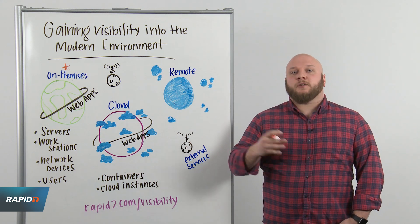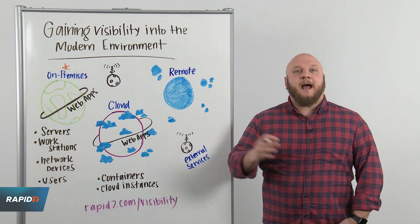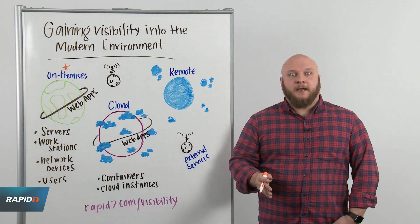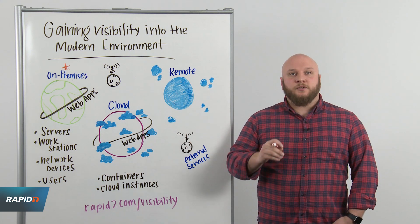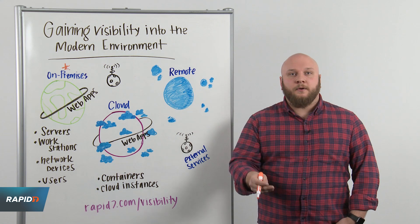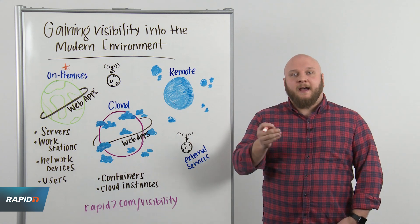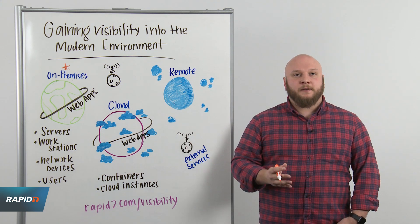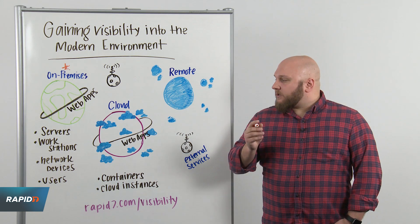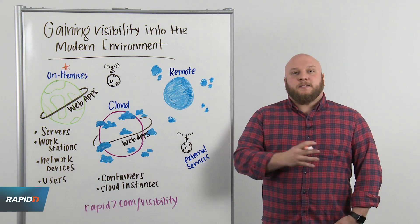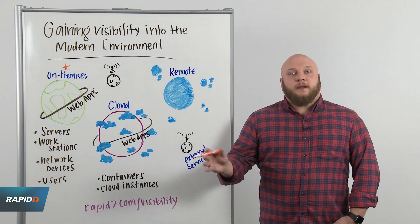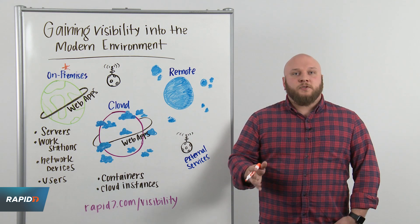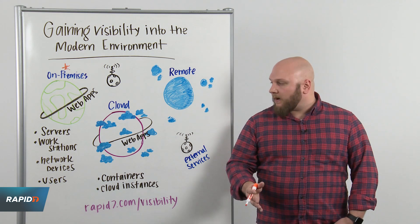In terms of workstations, as new desktops or laptops are added or removed from the environment, we should integrate with things like DHCP so that as new network leases are doled out, we get notification that something new has been introduced to our environment. And in regards to network devices, we need to scan our network, enumerate those devices, and fingerprint them so that we know what we have and what versions they're running.